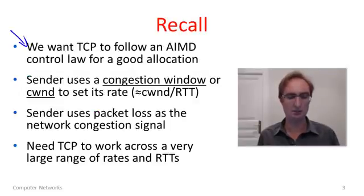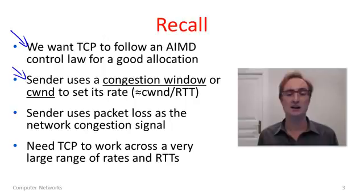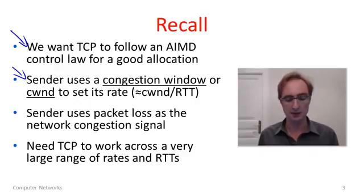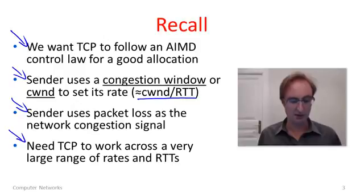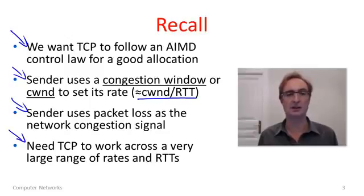Here's a little more background context before we go into the details. TCP is trying to get to an AIMD control law. The way we're going to implement it in TCP is to have the sender implement a congestion window and adjust its size, which controls the rate indirectly. The rate we get is the congestion window divided by the round trip time. We'll also use feedback from the network in terms of packet loss to understand when there's congestion. Using AIMD to adjust the congestion window is difficult because we want TCP to work across a very wide range of RTTs and link rates.